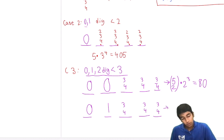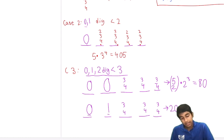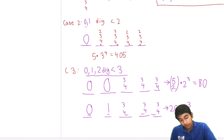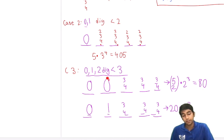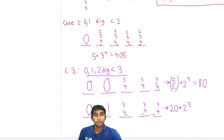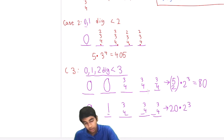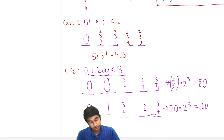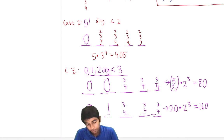Sub-case B for Case 3 has one 0 and one 1: 5 choices for the 0, 4 for the 1, giving 20 arrangements, times 2^3 = 8 for the remaining digits = 160. The total for Case 3 is 80 + 160 = 240.